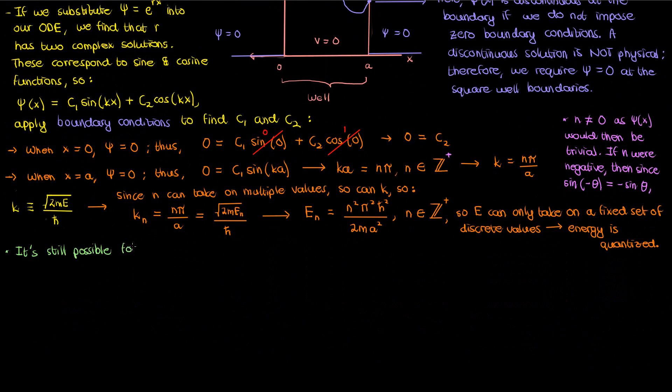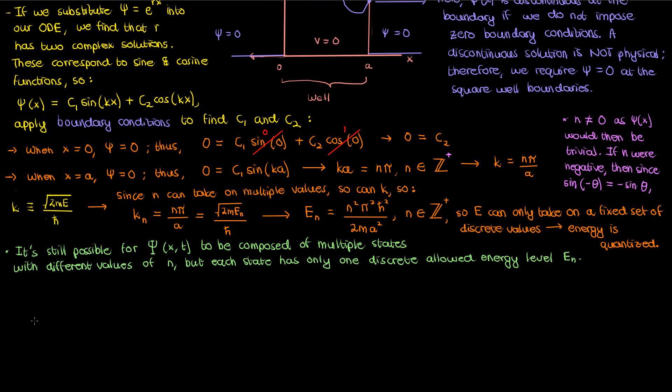Having said this, it is still possible for a wave function psi to be composed of multiple possible states with different values of n, with each state having its own energy E sub n. But that's the key, each state has only one discrete energy level E sub n, not multiple energy levels or a continuous energy level.